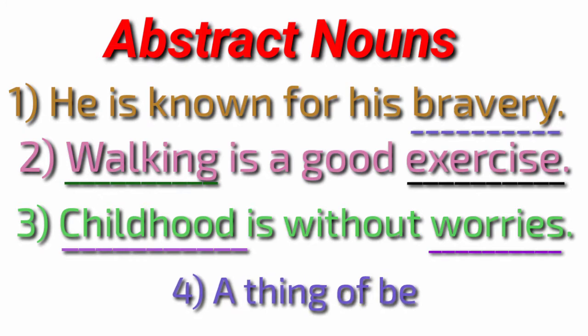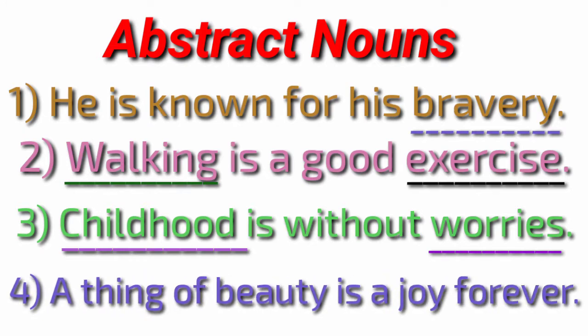A thing of beauty is a joy forever. Here two abstract nouns are given. Beauty is an abstract noun, and joy is also an abstract noun. All the underlined words in the above sentences are names of actions, qualities or states. Such words which name actions or qualities that can be thought of but cannot be seen or touched are called abstract nouns.